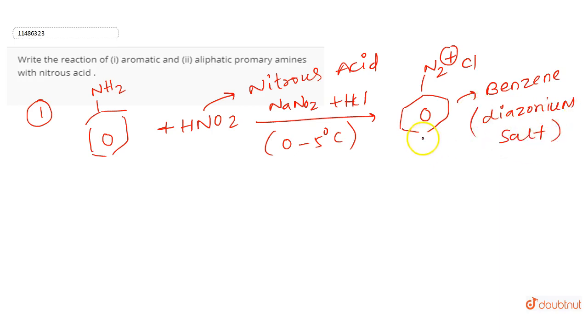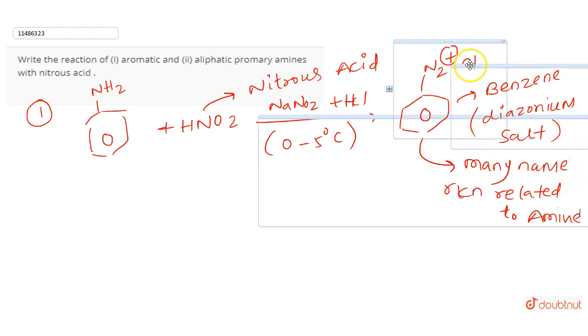This compound is used in many named reactions related to amines, for example, Sandmeyer reaction and coupling reaction. The benzene ring is responsible for its stability, and the temperature should be 0 to 5 degrees Celsius.